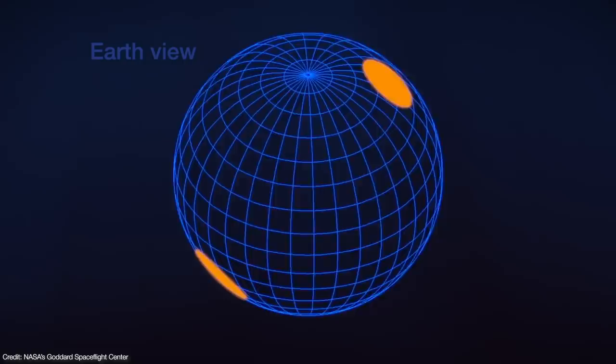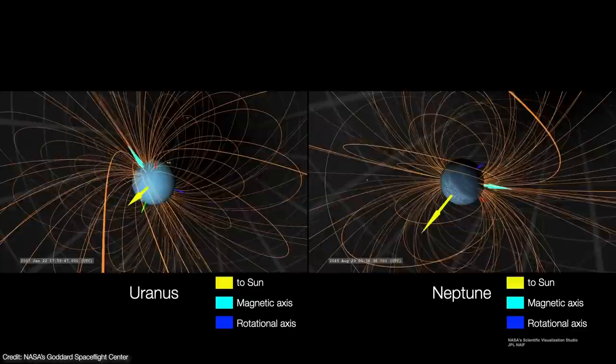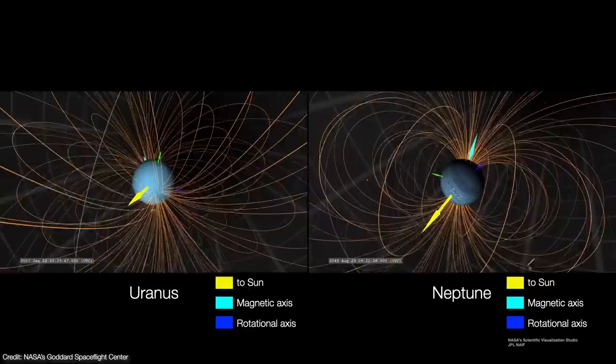Perhaps the pulsar started off with a typical dipole that somehow got shunted way off from the center down to the pulsar's southern hemisphere. Such offset magnetic fields are not uncommon in nature. For example, planets Uranus and Neptune in our own solar system have offset magnetic fields as well.